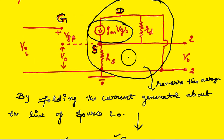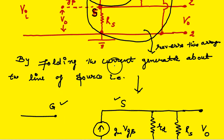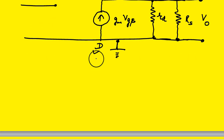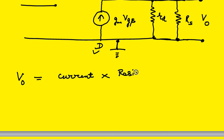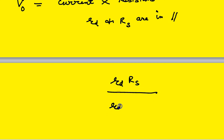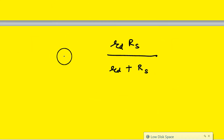The output is taken across RS. RD and RS are in parallel because the drain side is also grounded. By Ohm's law, voltage equals current multiplied by resistance. The two resistors RD and RS are in parallel, so the parallel combination is (RD × RS) / (RD + RS). The current is GM × VGS. So this gives the output voltage V0.